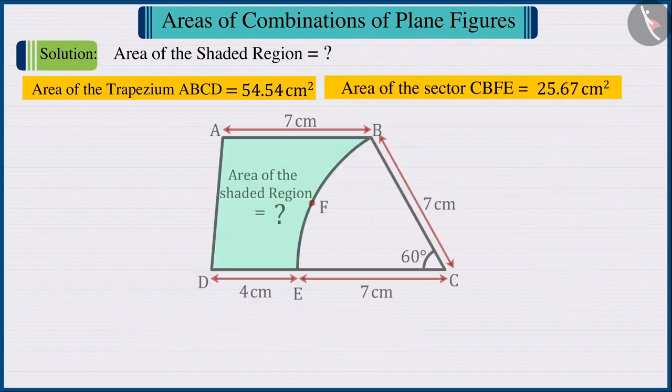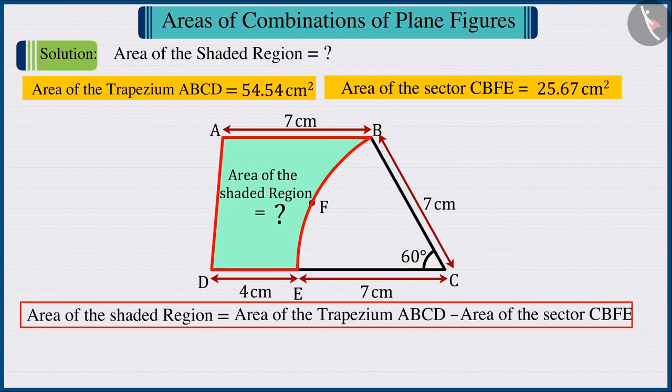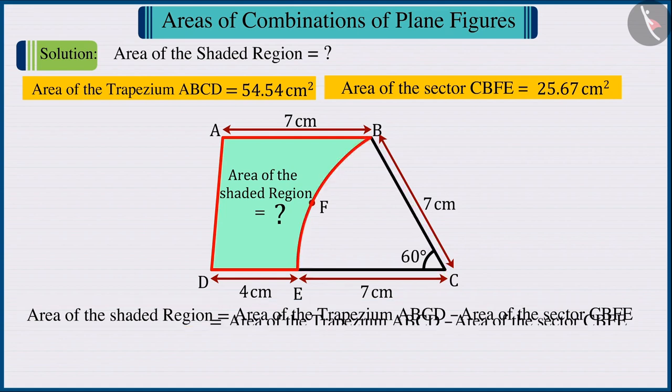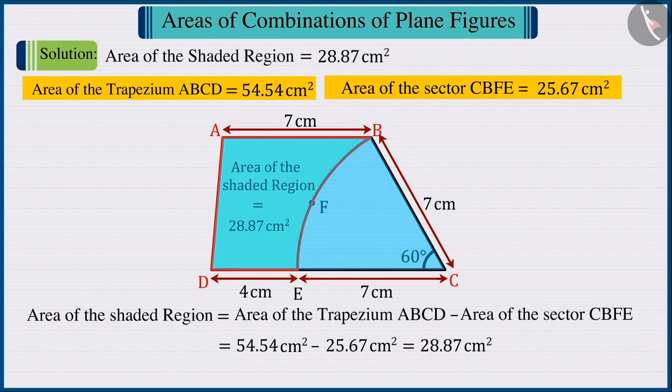Since we have to find the value of the area of the shaded region, we subtract the area of the sector from the area of the trapezium. The area of the shaded region is obtained as 28.87 cm². So, we can say that the area of the shaded region in the trapezium ABCD is 28.87 cm².